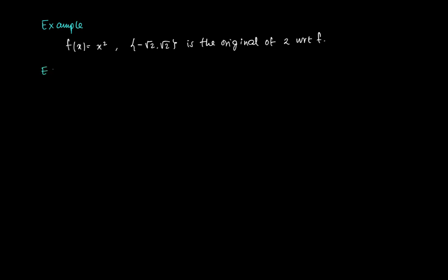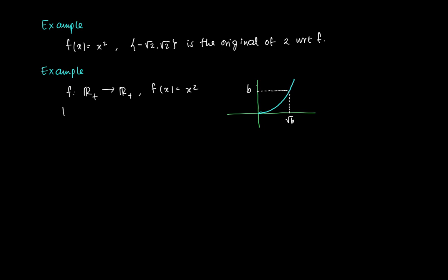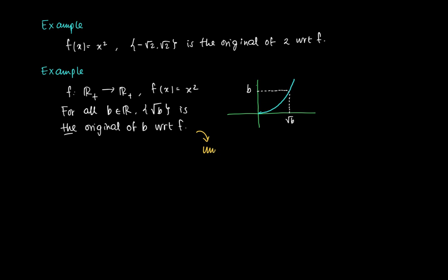We can slightly change the example and look at a different function: f defined on the non-negative reals, given by the same formula f(x) = x². As a graph we only get the right-hand side — only for positive numbers. For this function, if I take some non-negative b along the y-axis, I am able to retrieve a unique original, which is called the square root of b.